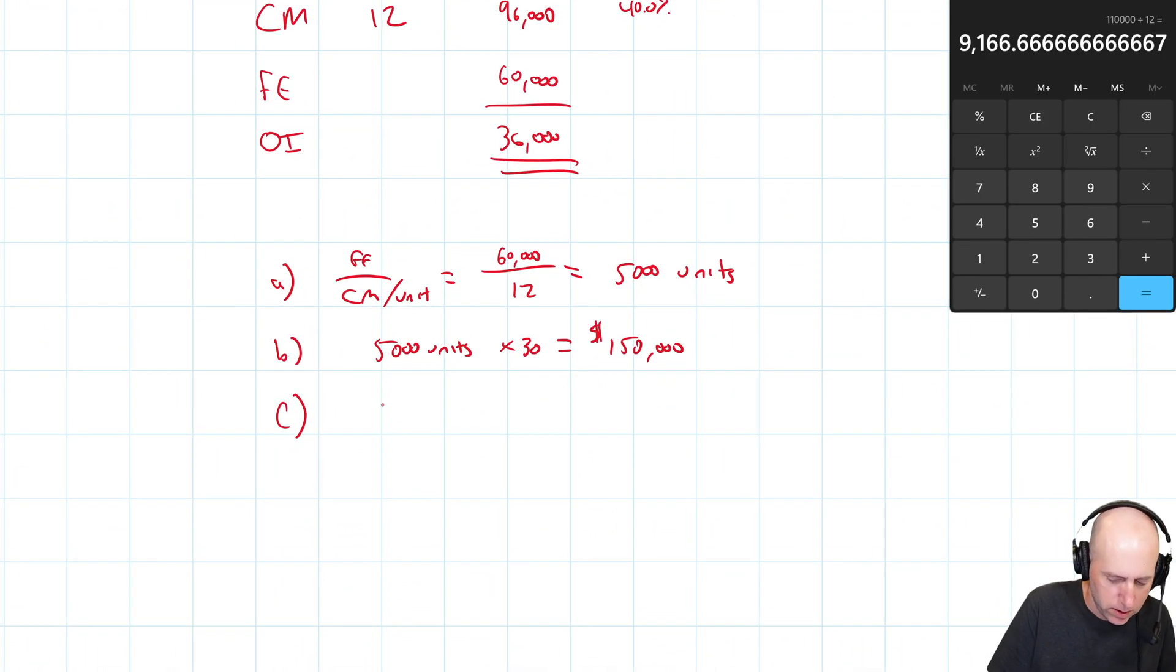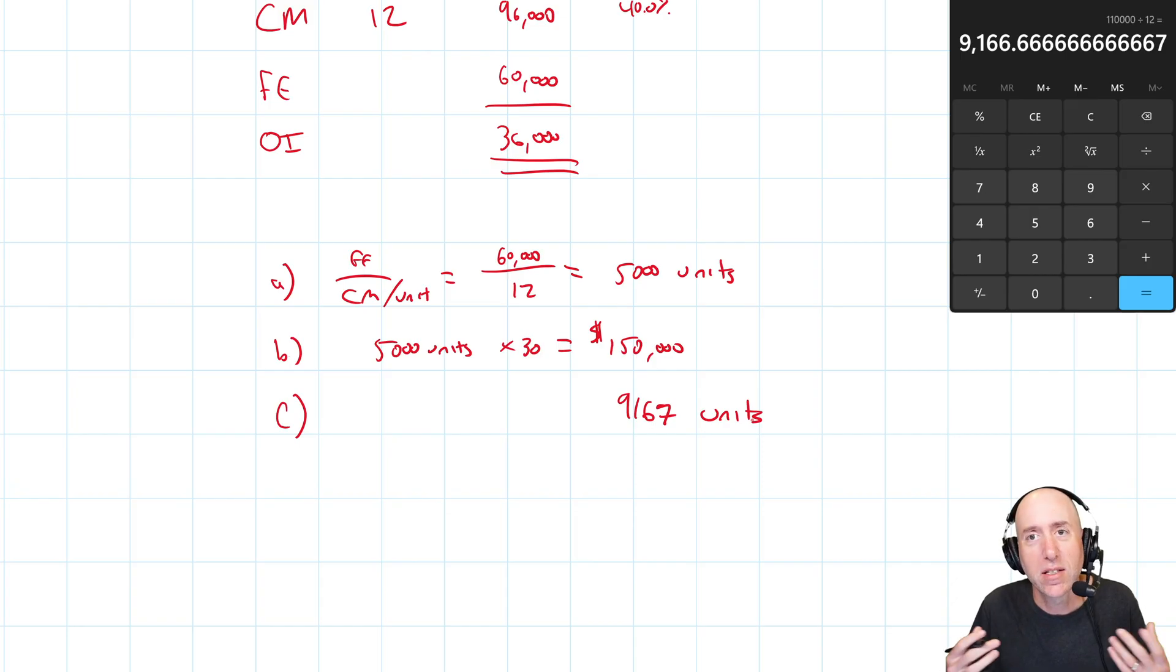So the answer here is 9,167 units. We do round up when we get a decimal answer for breakeven points because you can't sell 0.6 neckties. Even if it was like 0.3, 9,166.333, we would round up to the next number. Even though with 0.3 you normally round down, with breakeven you round up.